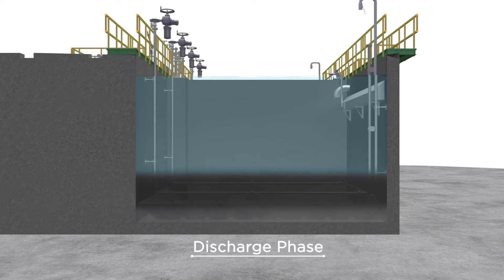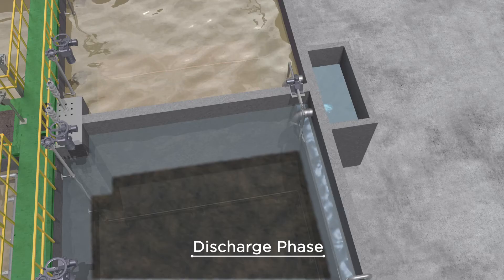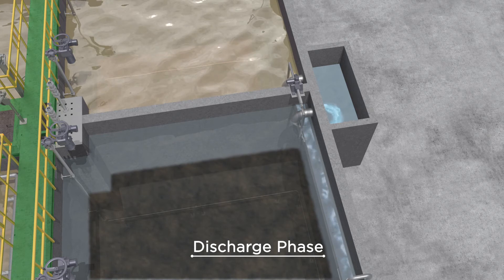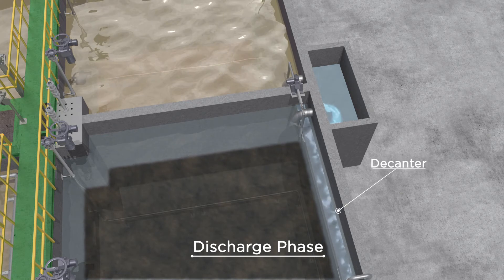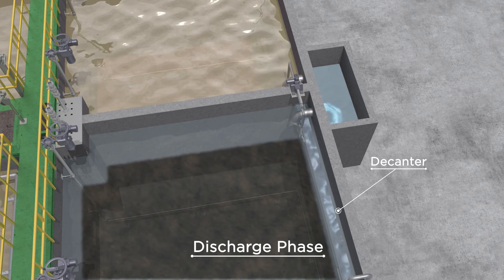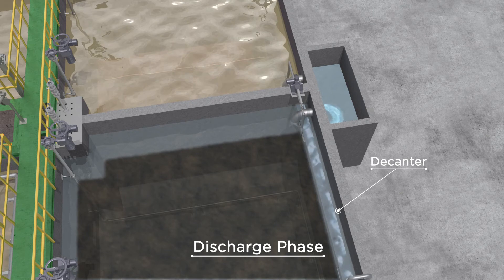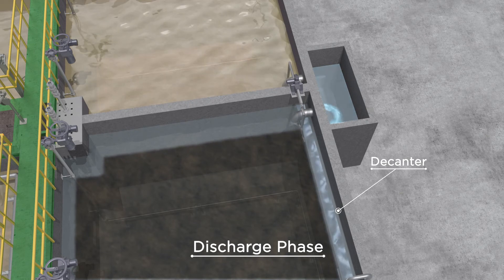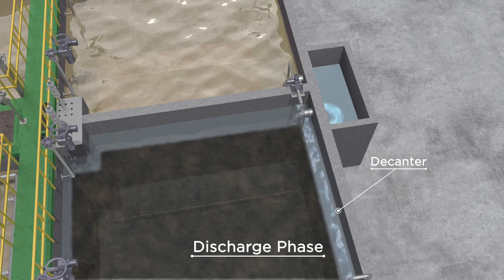The final phase is the discharge phase. The effluent valving of the associated Alt Tank opens, forcing forward flow to be directed into that Alt Tank. The movement of flow displaces the clear supernatant, which is discharged through a submerged fixed decanter. The decanter is designed to provide optimal solids exclusion. The associated discharge is low in effluent TSS, BOD, and nutrients.